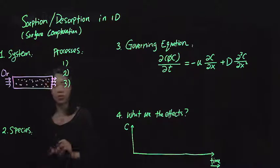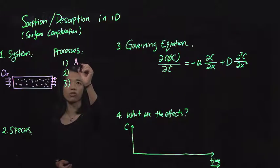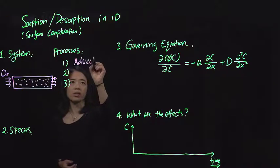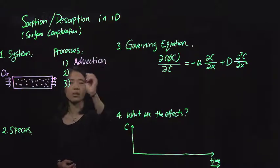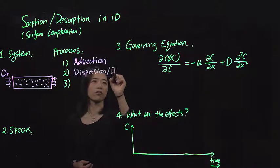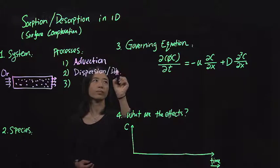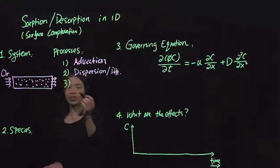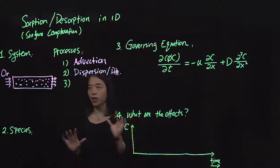So when you think about the processes that it goes through, again, we have the advection process, which is not surprising, and then dispersion and advection, or diffusion. But again, there's this sorbing reaction happening.